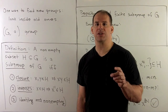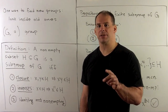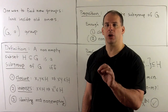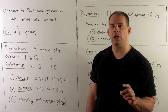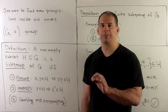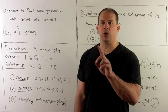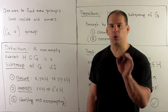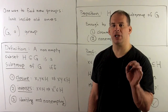One recurring theme in mathematics: when we define a class of objects, we're interested in finding rules that let us construct new objects from the objects we already have. We have the definition of a group and a handful of examples. One way to get new groups is to look inside the groups we already have — we're looking for groups inside of groups. This brings up the notion of a subgroup.